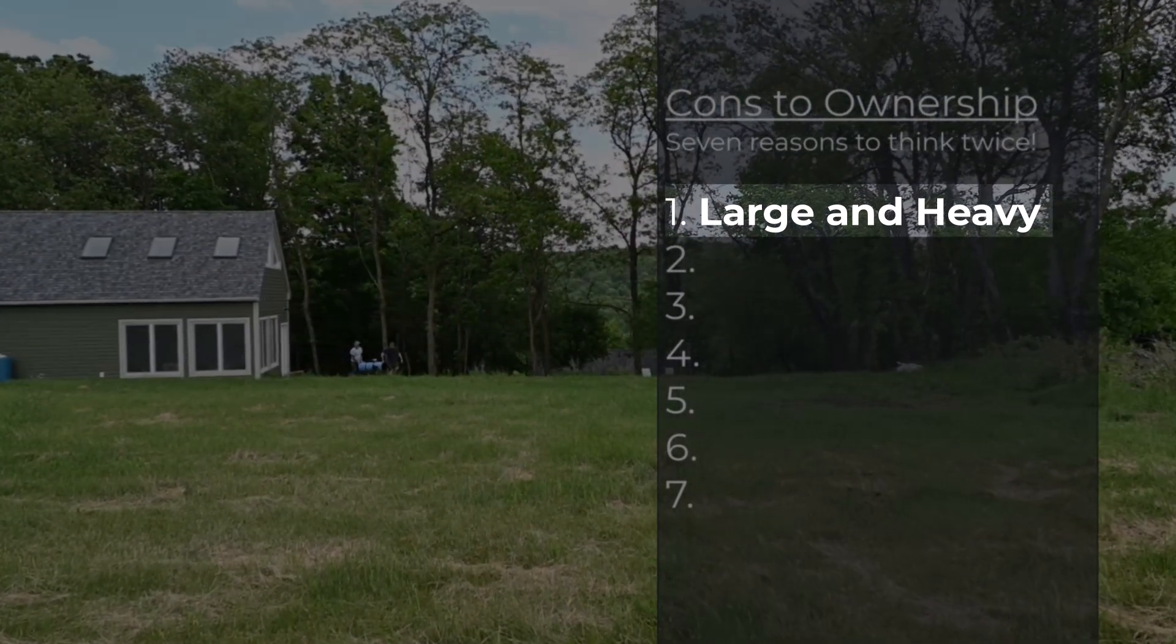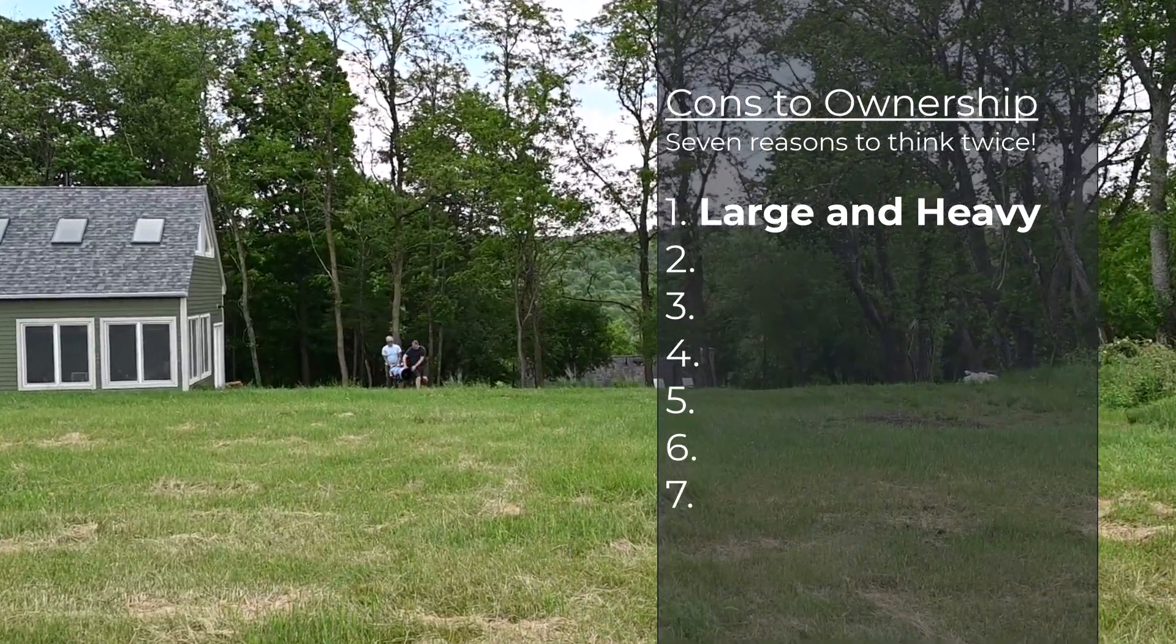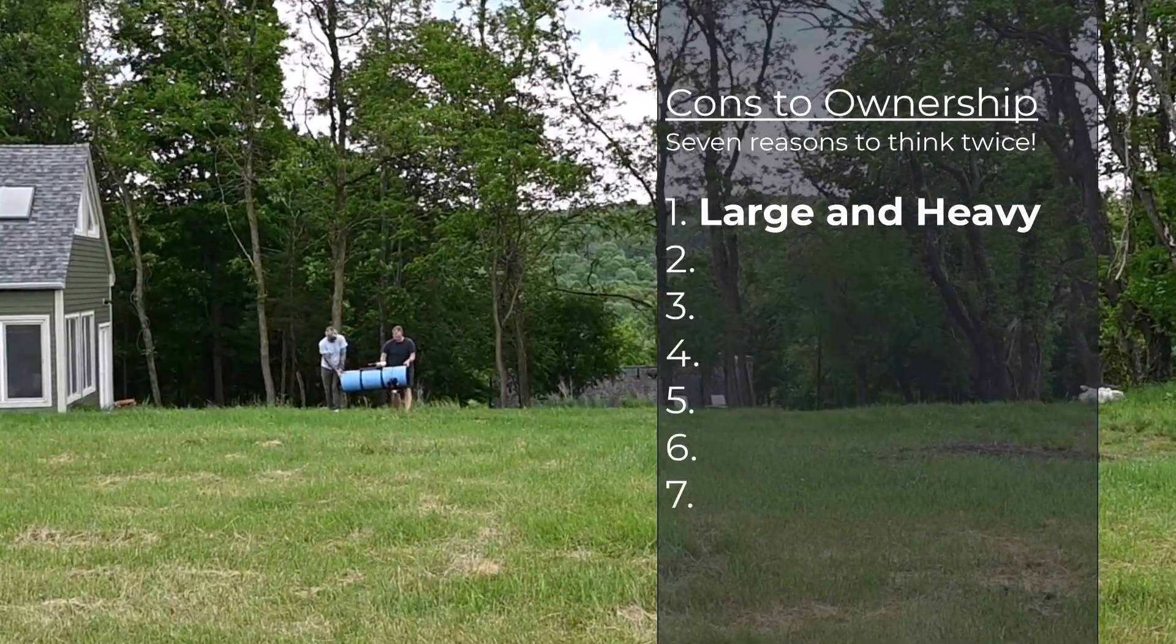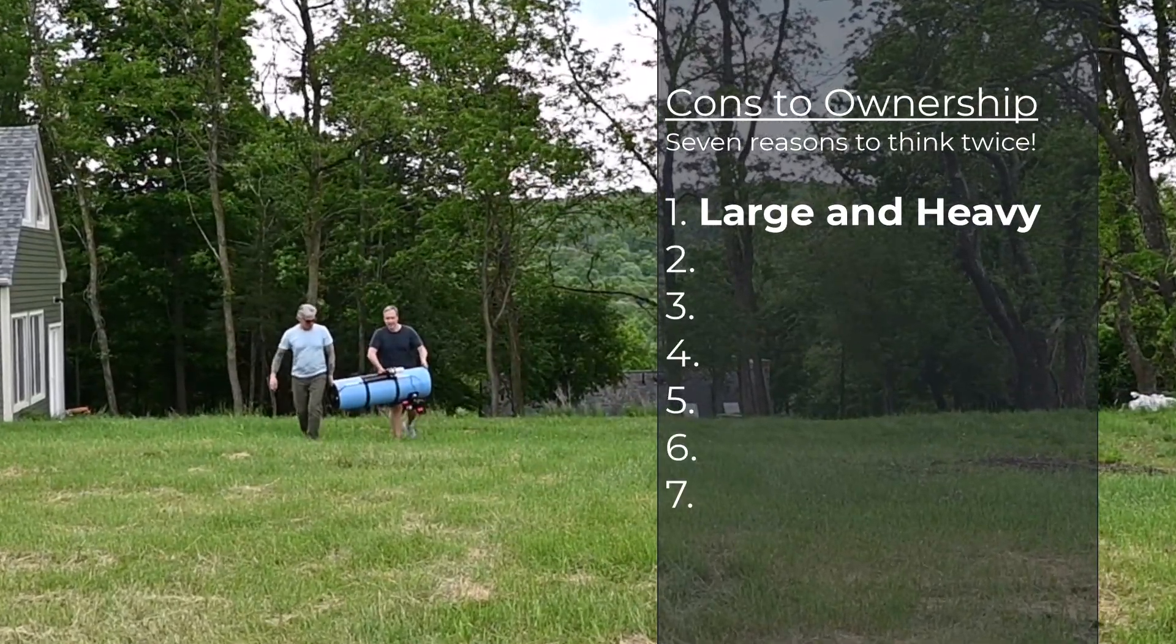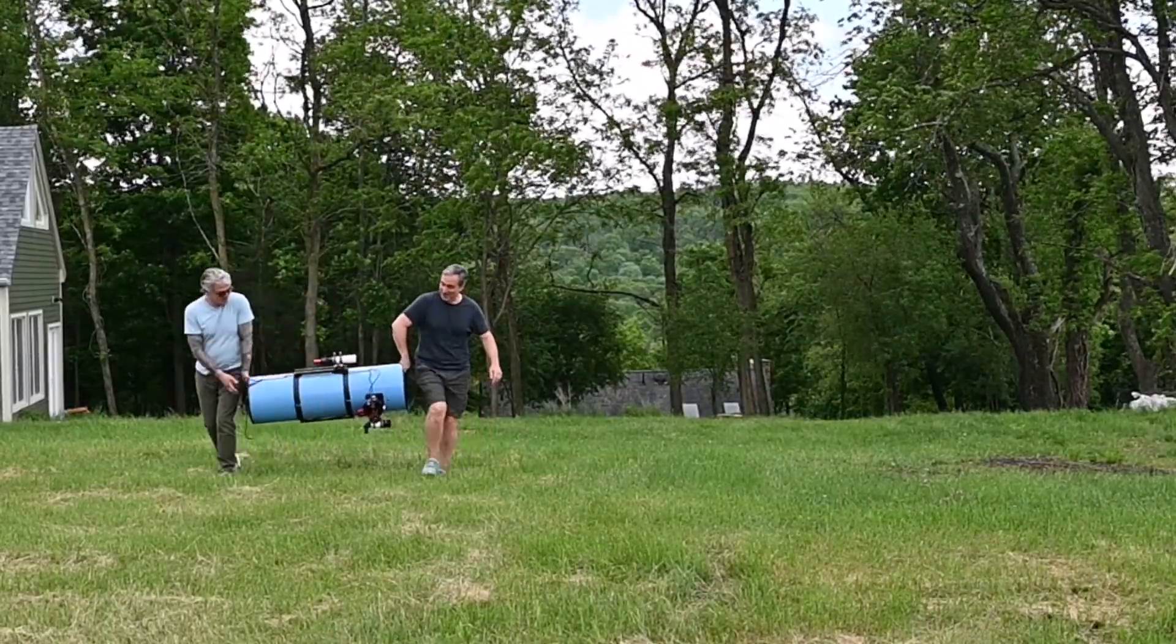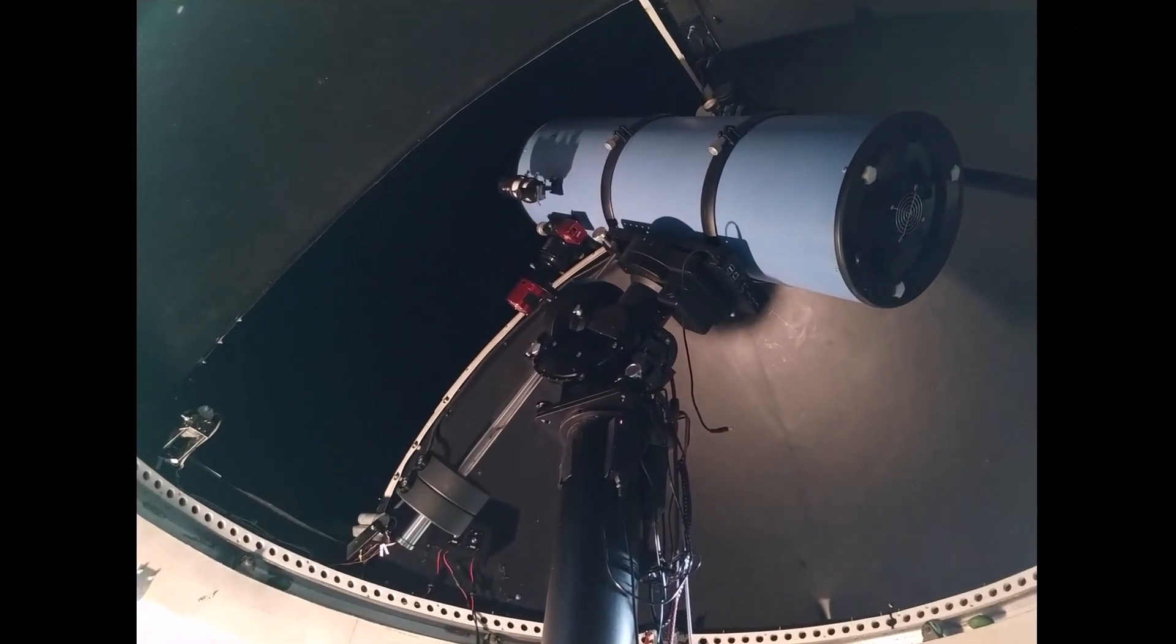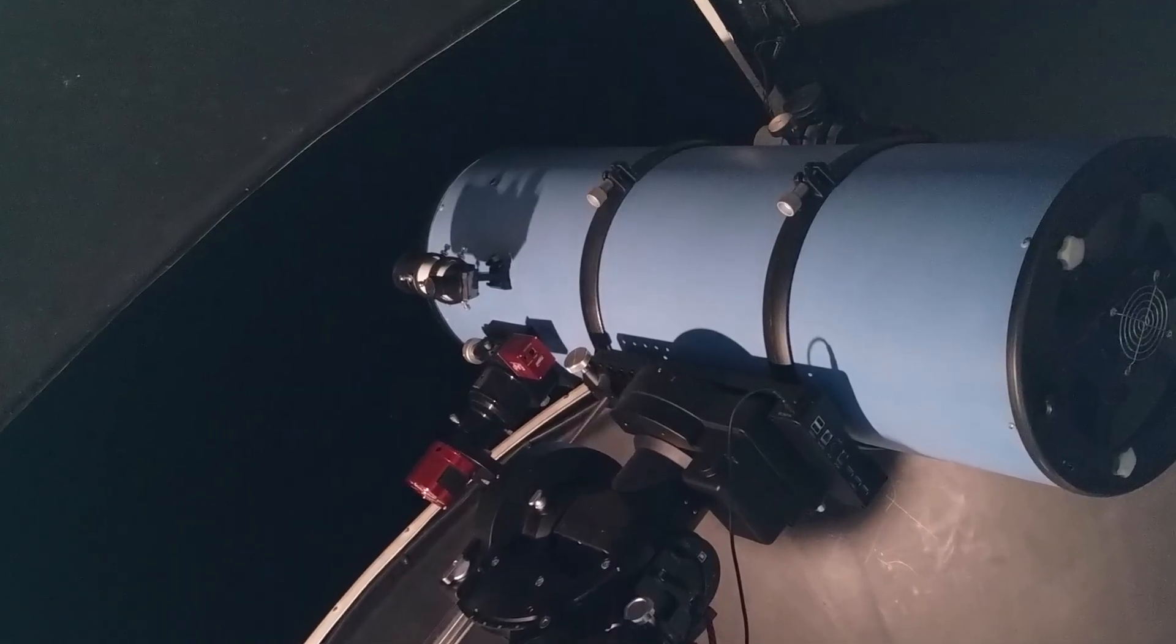It is a big telescope, and big means bulky and heavy. This thing weighs in at around 60-65 pounds once it's outfitted with an image train and balanced on the mount. It's really not practical for nightly setup and teardown, at least not for me. This deserves a permanent installation in a dome or a roll-off roof observatory, and given my pier design, it barely fits in my 8-foot Explorer Dome.